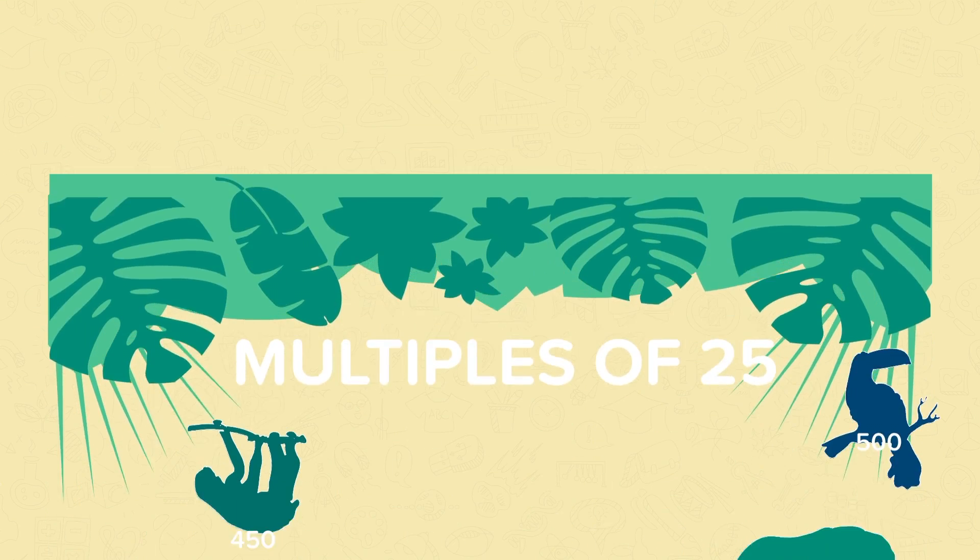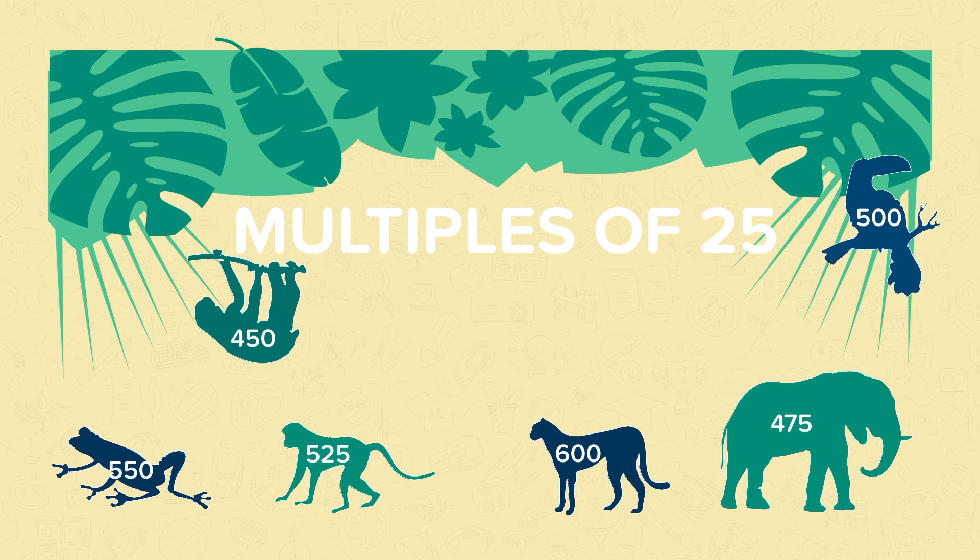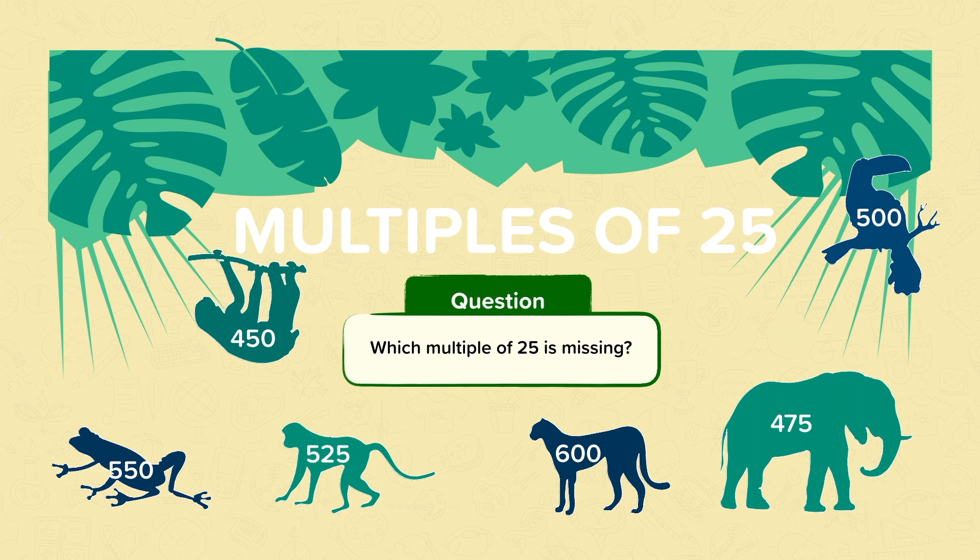Now have a look at these multiples of 25. Put these numbers in order to form a sequence and work out which multiple of 25 is missing. Pause the video and have a go.